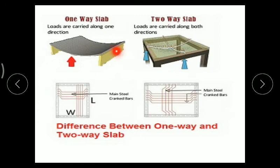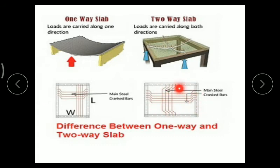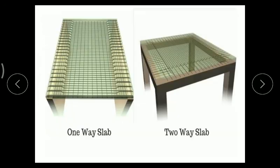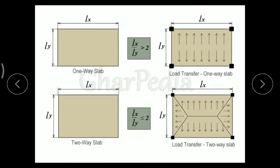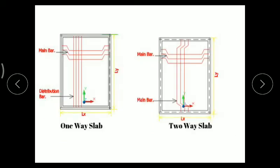As far as slabs are concerned, there are two types. A one-way slab is where deflection occurs in one direction. If the slab deflects in two directions, it is known as a two-way slab. Main steel bars are required parallel to the longer span, and distribution bars are parallel to the shorter span. In a two-way slab, additional reinforcing bars are provided parallel to both longer and shorter spans. If the ratio LX/LY is greater than 2, it is a one-way slab; if less than or equal to 2, it is a two-way slab.